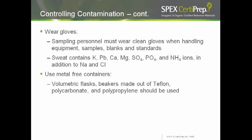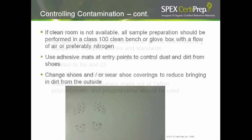Sweat contains potassium, lead, calcium, magnesium, as well as sulfate, phosphate, and ammonium ions, in addition to sodium and chloride. Use metal-free containers. Volumetric flasks and beakers made out of Teflon, polycarbonate, and polypropylene should be used. If a clean room is not available, all sample preparation should be performed in a Class 100 clean bench or a glove box with a flow of air, preferably nitrogen. Use adhesive mats at entry points to control dust and dirt from shoes.